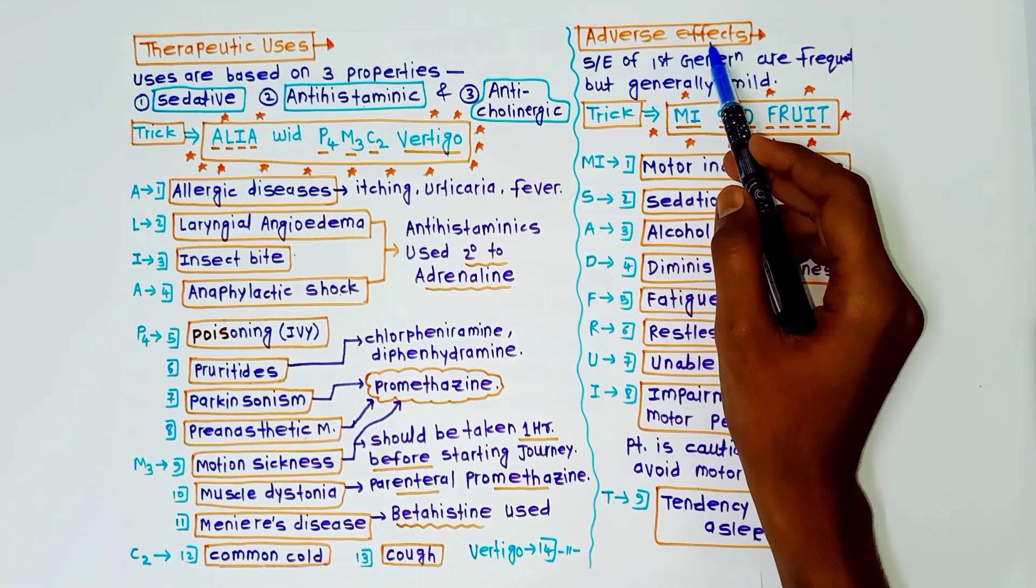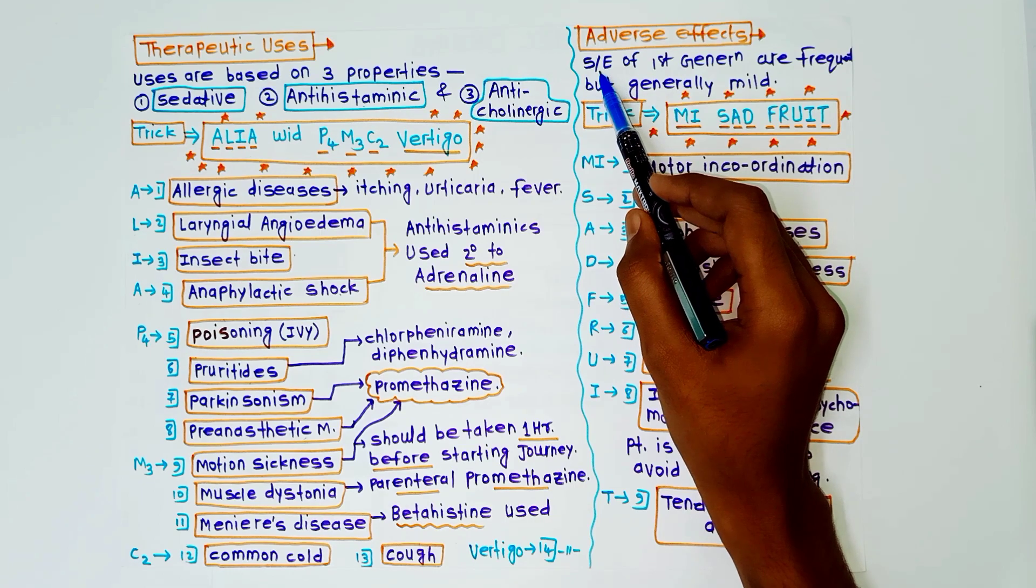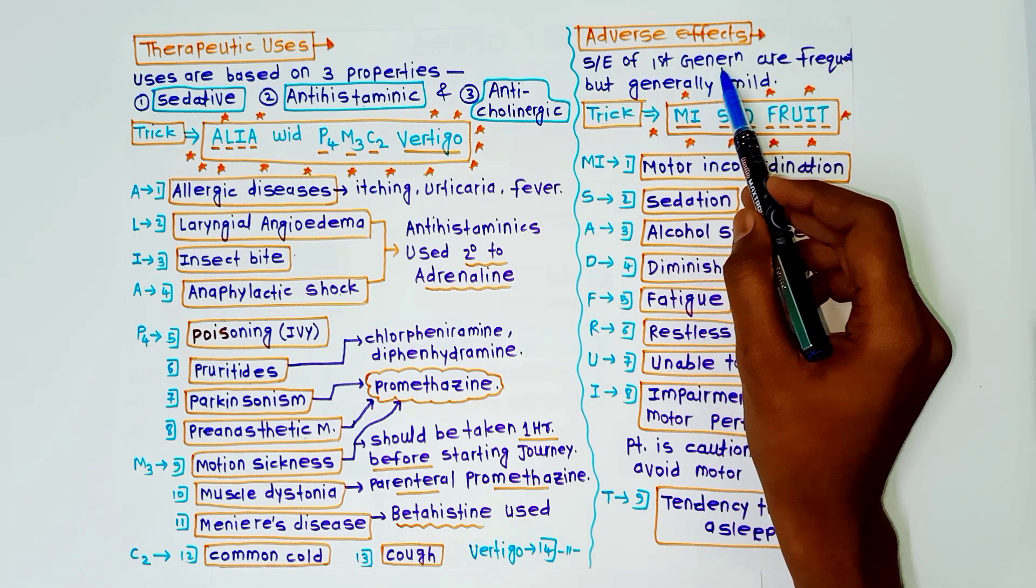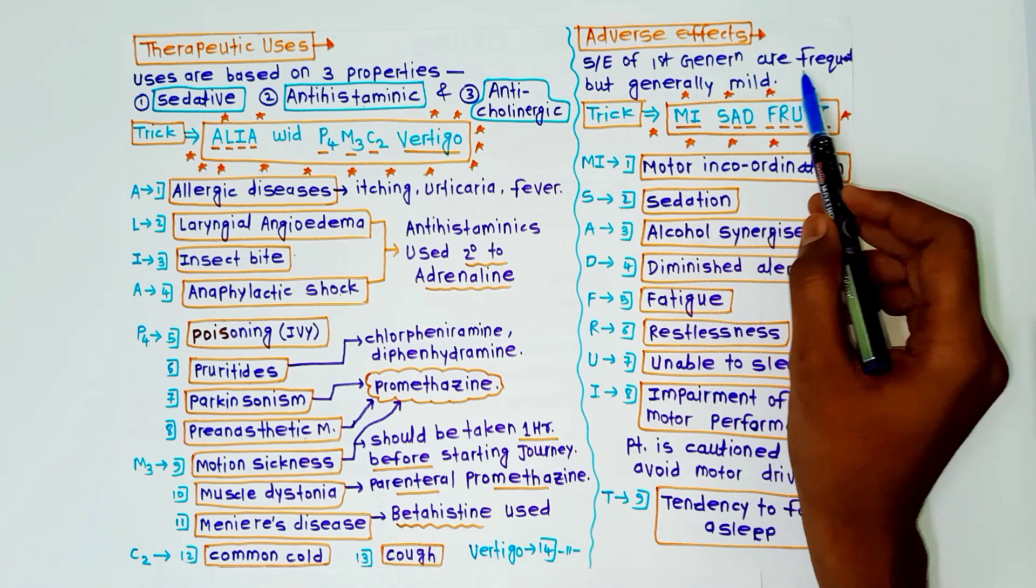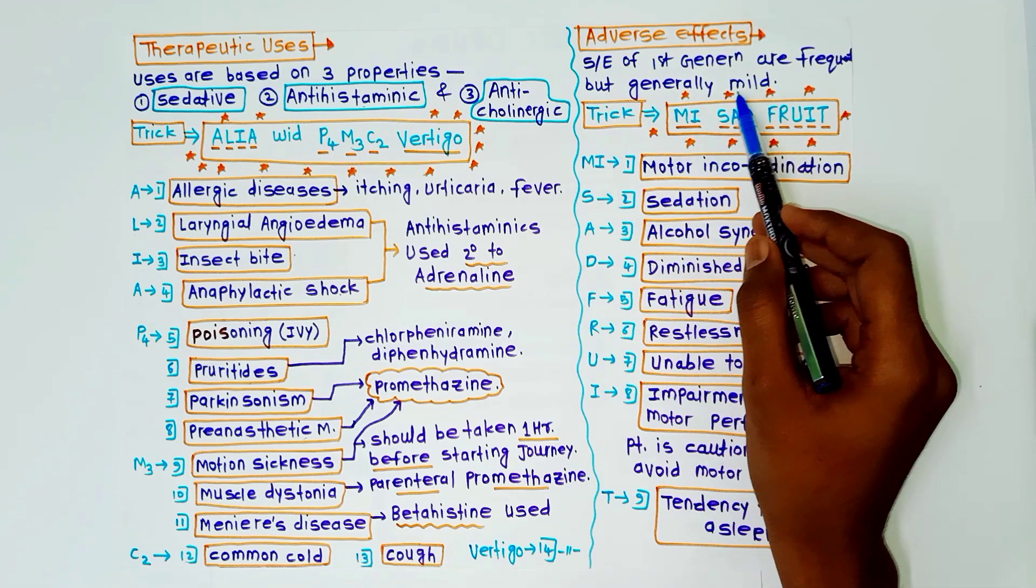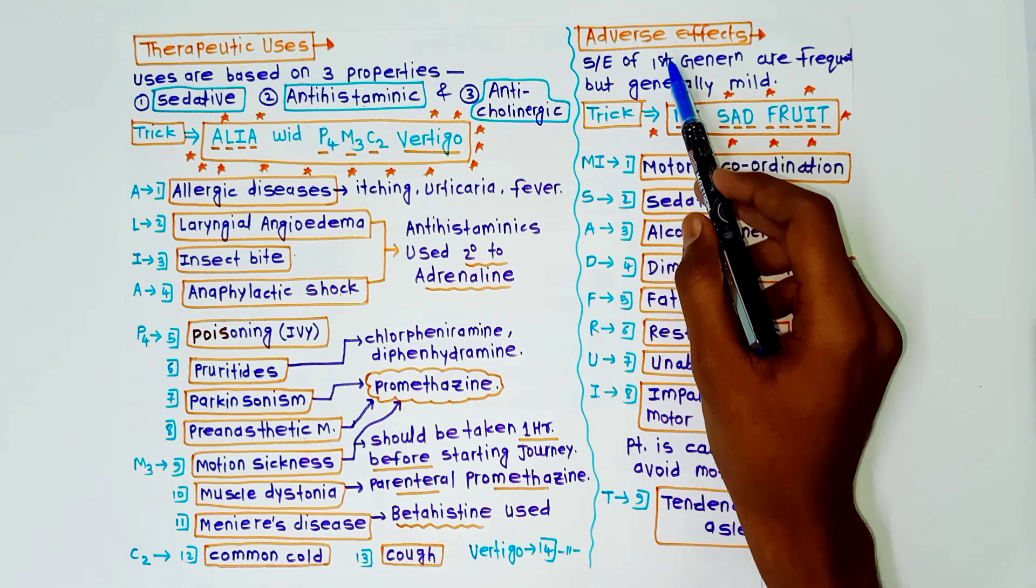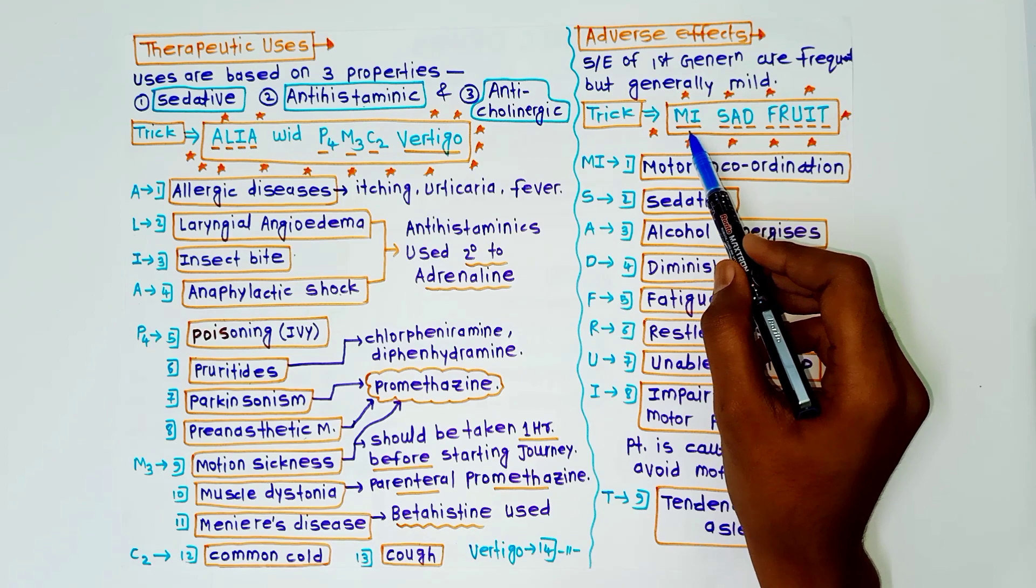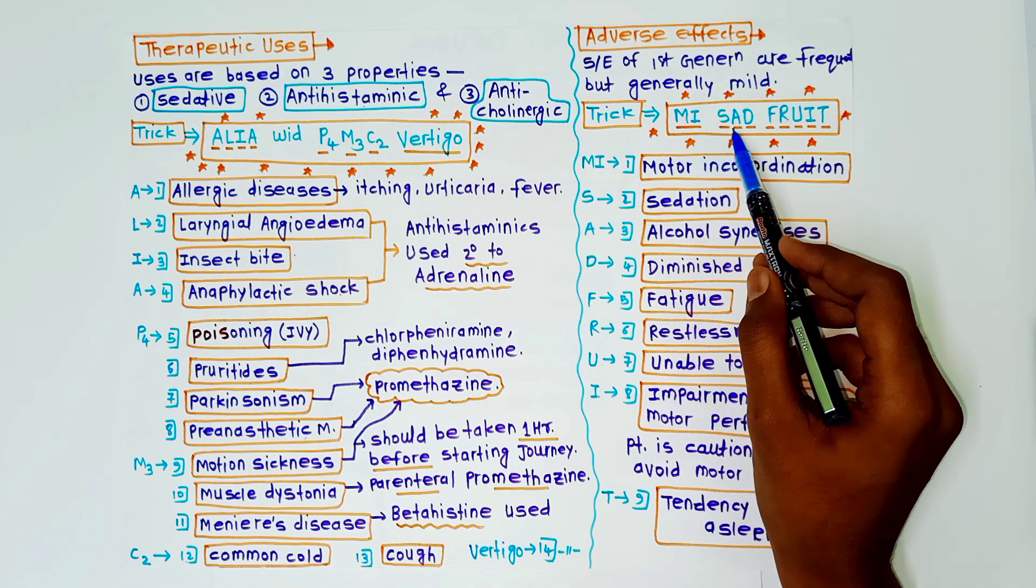Now we will see the adverse effects of H1 antihistaminic drugs. So side effects of first generation or H1 antihistaminics are frequent but generally they are mild. So trick to remember this adverse effect of H1 antihistaminics is MY SAD FRUIT.